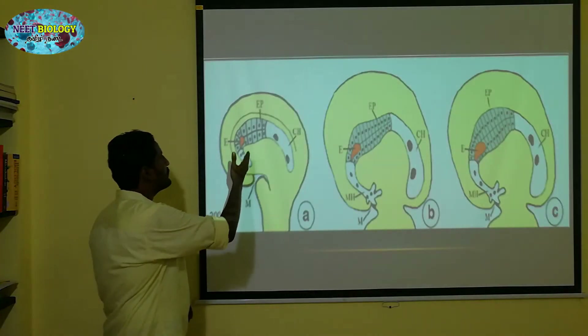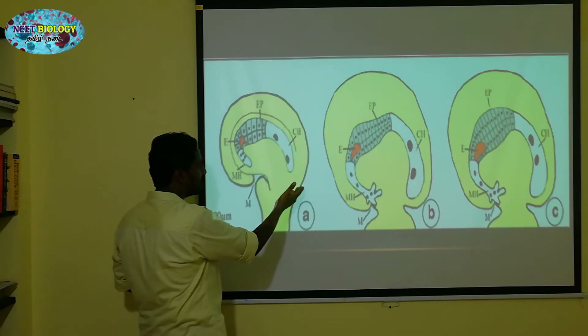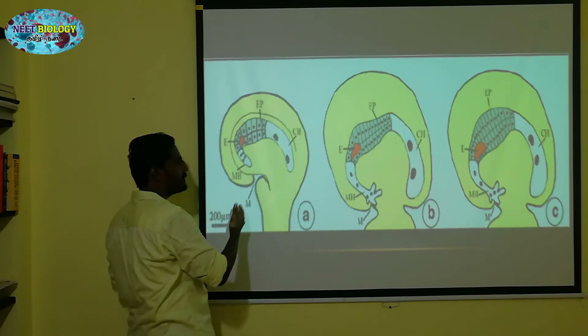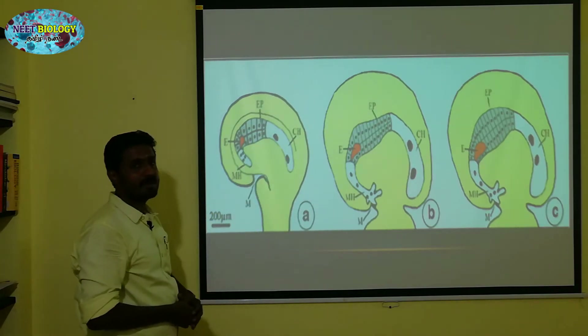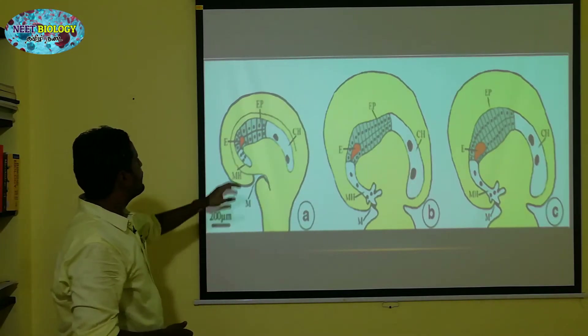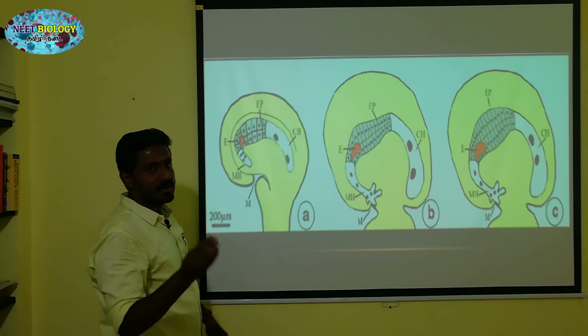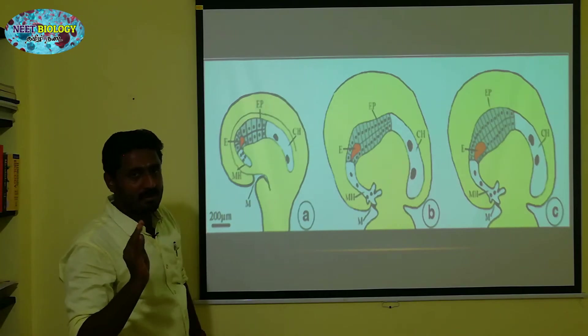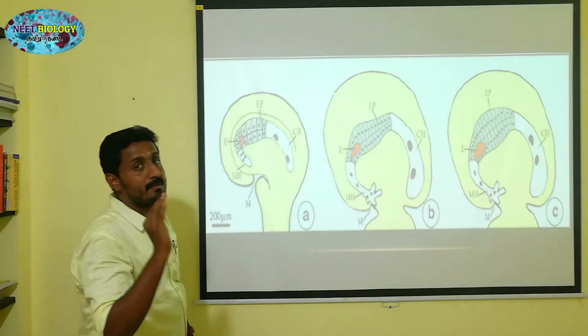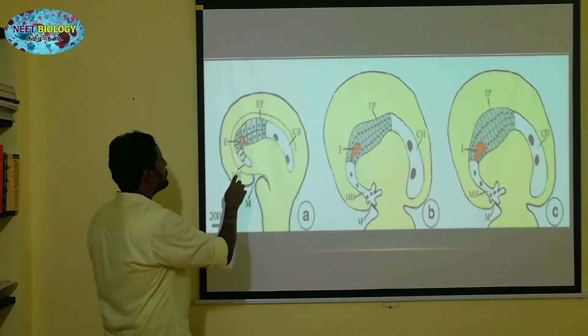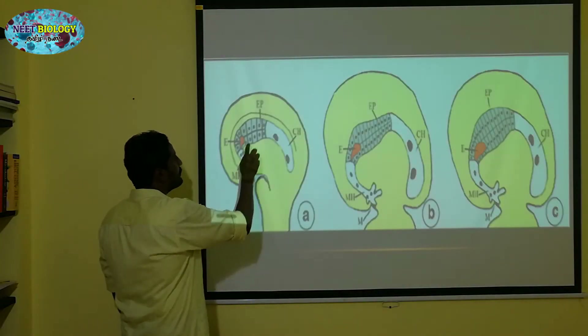The endosperm is here, on the side of the embryo. If you look at this embryo, the endosperm is fine. But at the same time, this embryo's endosperm is on the side.